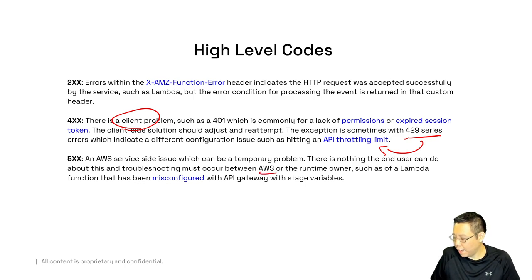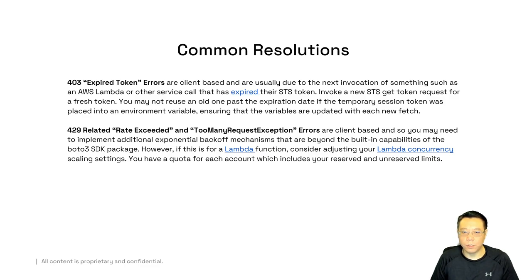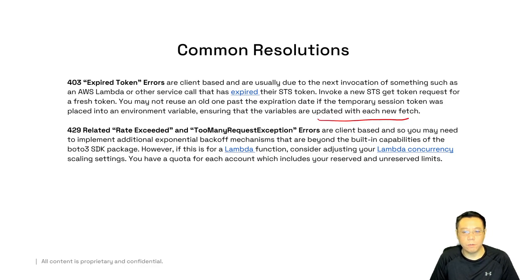Let's look at common resolutions to common errors you might see, especially on the exam. The 403 is an expired token error — in most cases it also means forbidden versus unauthorized. If you have an STS-expired token, you need to invoke a new STS get-token request and get a fresh token. You should never reuse an old token, as this will cause additional errors in logging. If your token was placed in an environment variable, ensure the variables are updated with a new fetch. This could be an issue with your code or with no-clobber features being enabled.